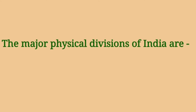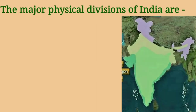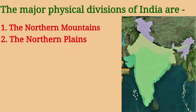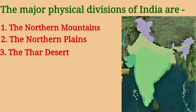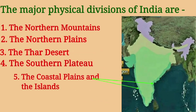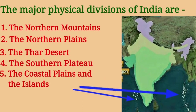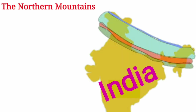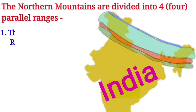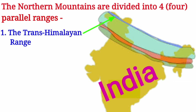The major physical divisions of India are the northern mountains, the northern plains, the Thar desert, the southern plateau, the coastal plains, and the islands.